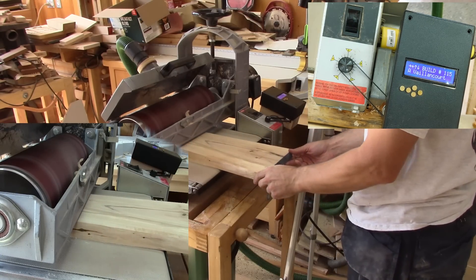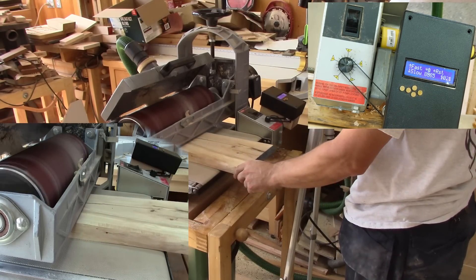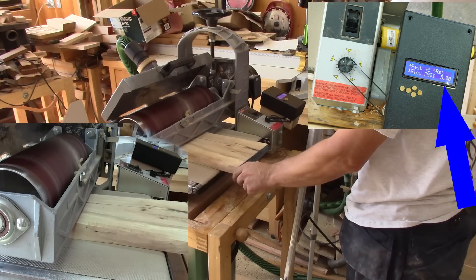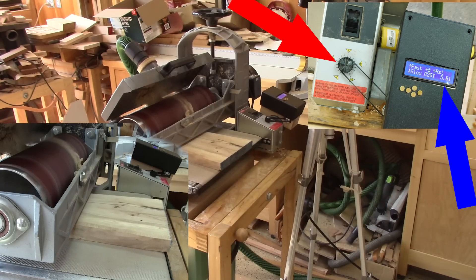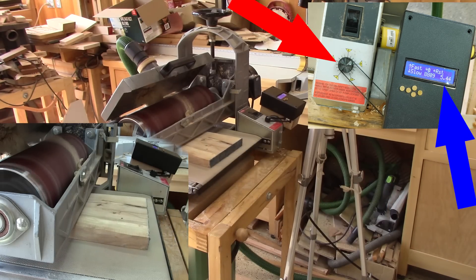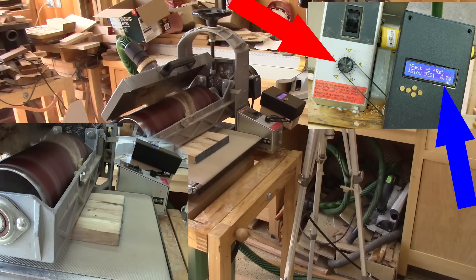And here's a demonstration of the circuits working. As you can see, when the motor's current exceeds nine amps, the stepper motor reduces the speed of the feed rate and the motor uses less power. You can see it right here.